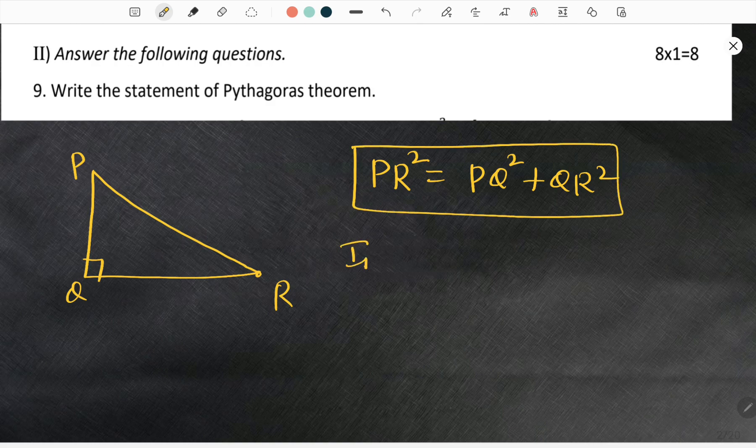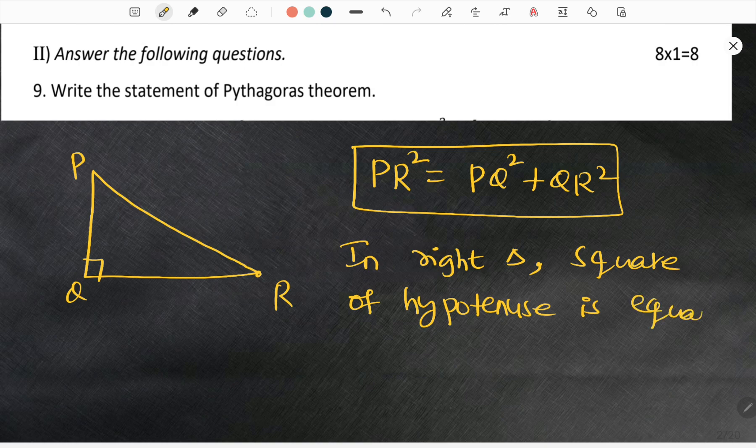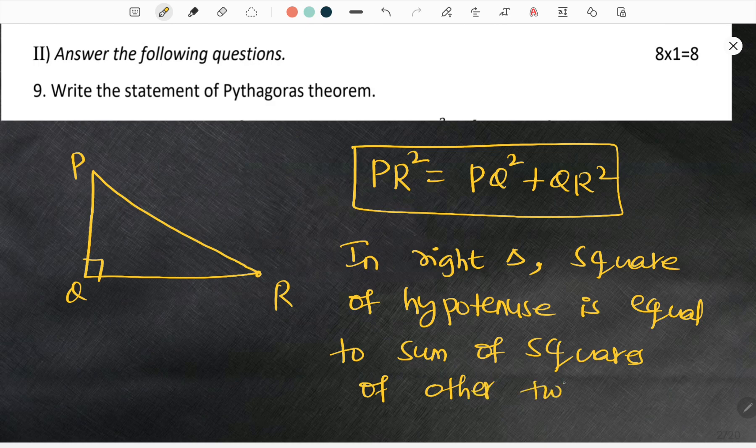What is the statement? In a right triangle, square of hypotenuse is equal to sum of squares of other two sides. That is it. So this is Pythagoras theorem.